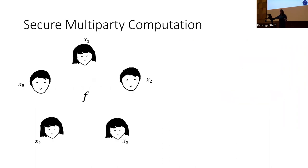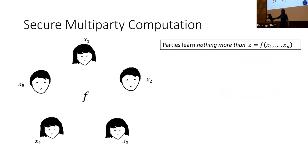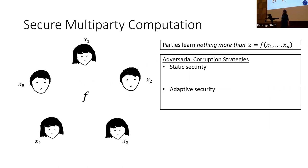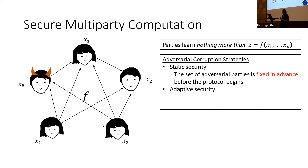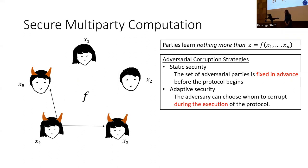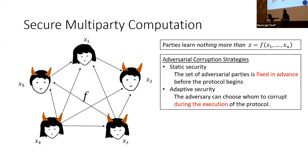Secure multi-party computation involves n parties who want to compute a function securely. We are interested in various corruption strategies: static and adaptive. In the static setting, the adversary chooses which parties to corrupt at the beginning of the protocol, fixed in advance. This is not realistic because hackers can observe communication during the protocol and then decide which parties to compromise.